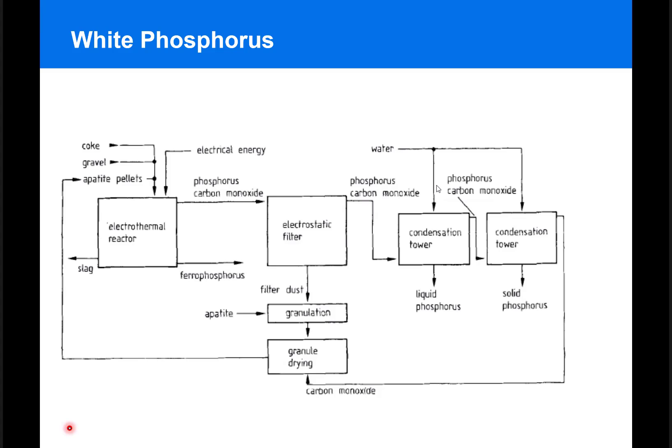This is a flowchart that summarizes the production of white phosphorus, in which coke and apatite ore are pumped into the electrothermic reactor, where the electrical energy along with carbon monoxide helps reducing phosphate into white phosphorus.